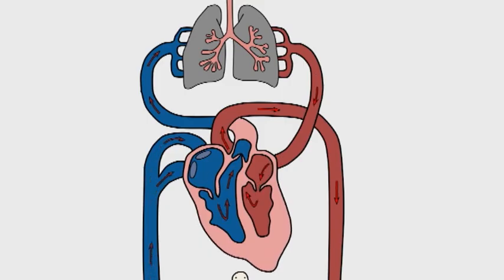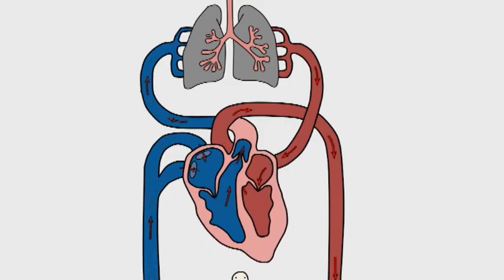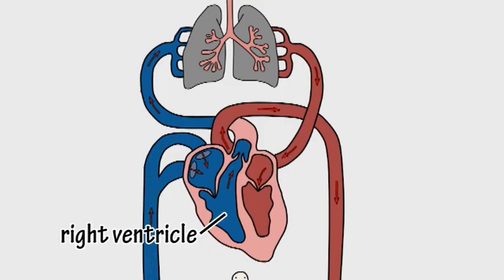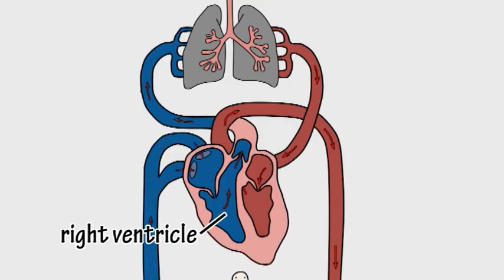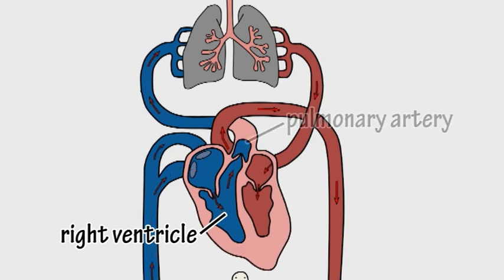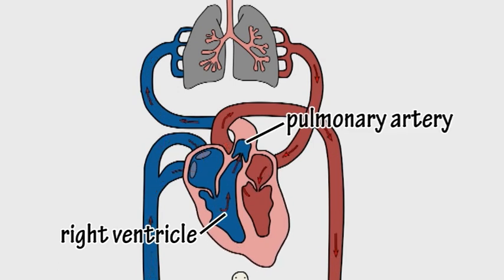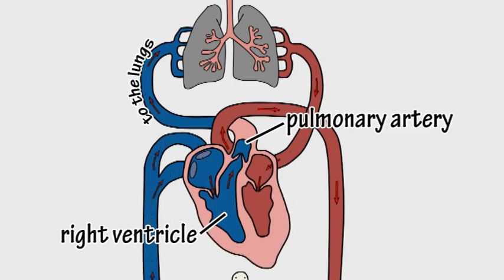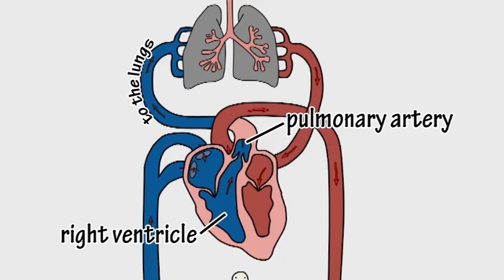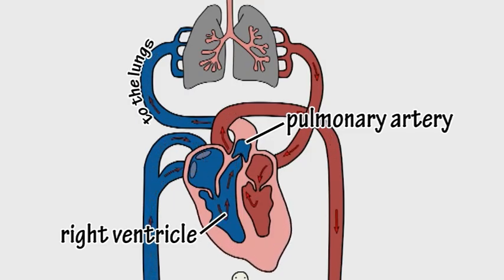This deoxygenated blood passes into the right ventricle whose walls contract, pumping it out through the pulmonary artery to the lungs where hemoglobin in the blood picks up oxygen.